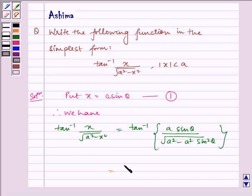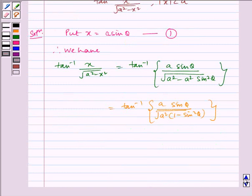This is equal to tan inverse of a sine theta by under root a squared. By taking common, we get 1 minus sine squared theta.